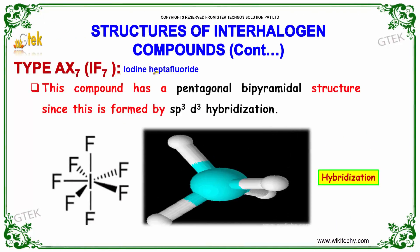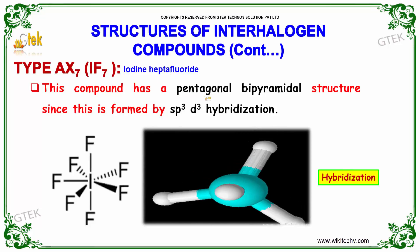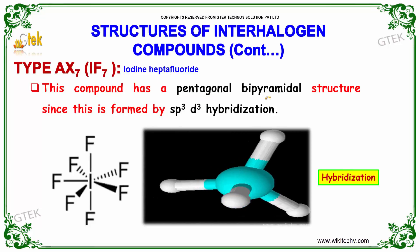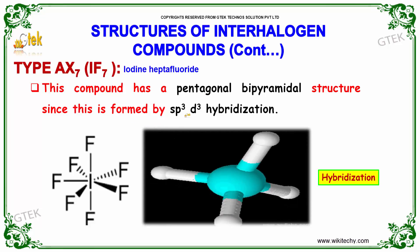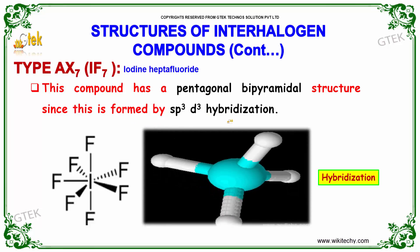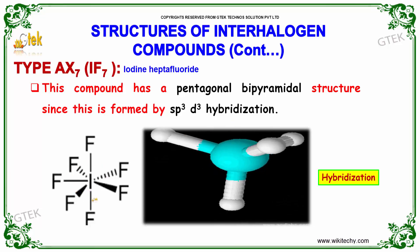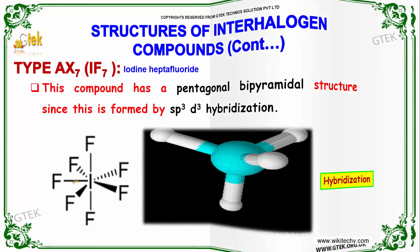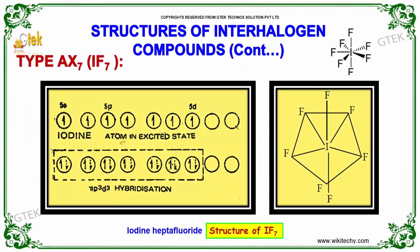For iodine heptafluoride, the compound holds a pentagonal bipyramidal structure, since it is formed by SP3D3 hybridization. Here is the structure. The iodine atom in its excited state and SP3D3 hybridization state is shown here.